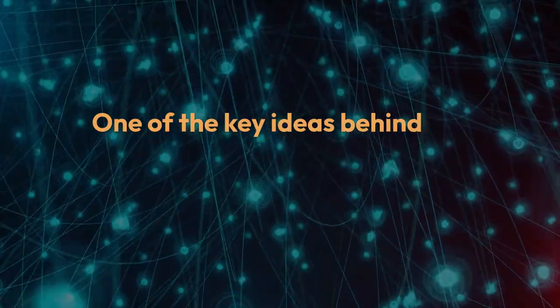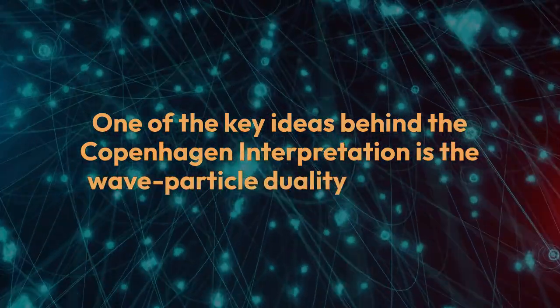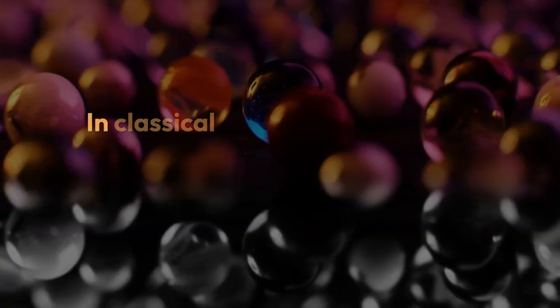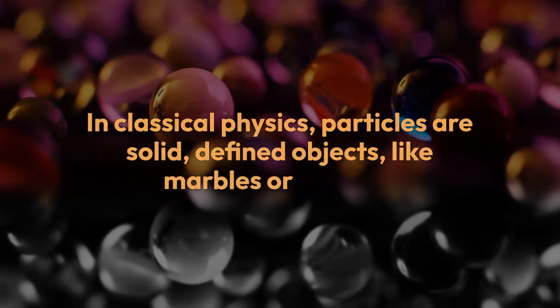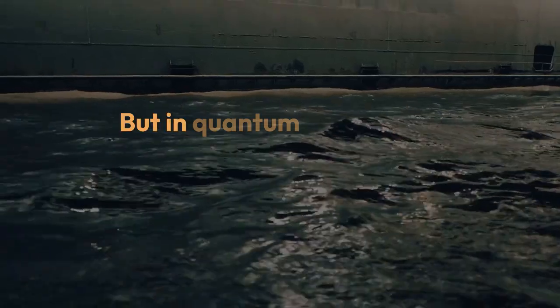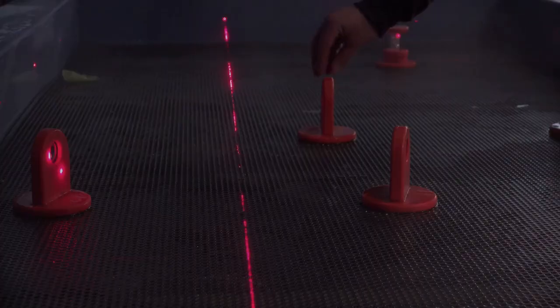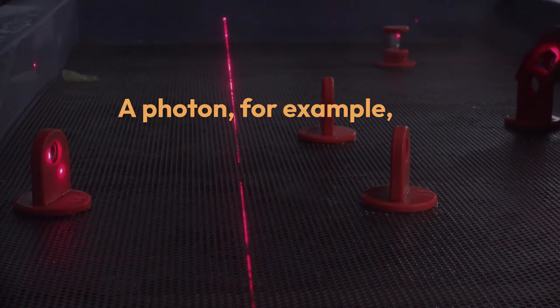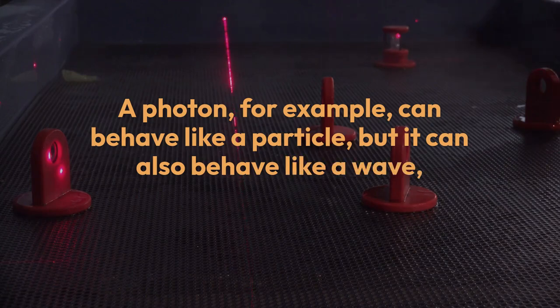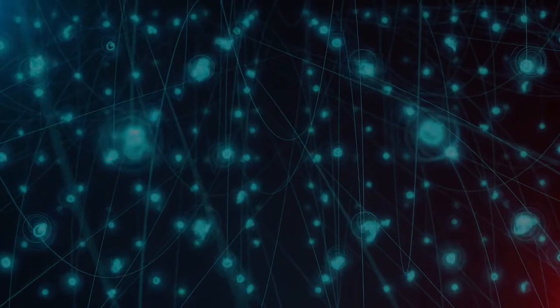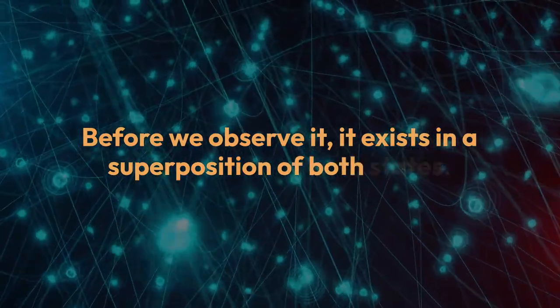One of the key ideas behind the Copenhagen interpretation is the wave-particle duality of matter. In classical physics, particles are solid, defined objects, like marbles or planets. But in quantum mechanics, particles can act like both particles and waves. A photon, for example, can behave like a particle, but it can also behave like a wave, depending on how we observe it. Before we observe it, it exists in a superposition of both states.